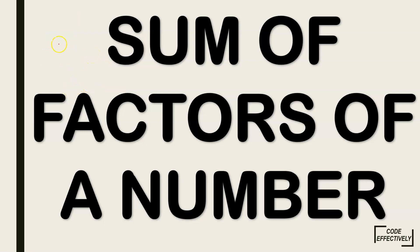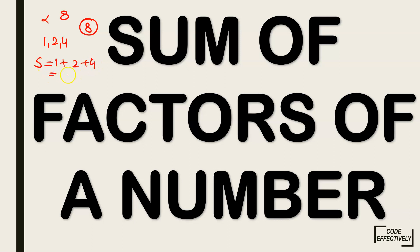Now we have to find the sum of the factors of 8. First we find what the factors of 8 are. The factors of 8 are 1, 2, and 4. We make sure that we don't include 8 as a factor, because we don't include factors equal to the number itself. So the sum is 1 plus 2 plus 4, which gives us 7. The sum of factors of 8 is 7.